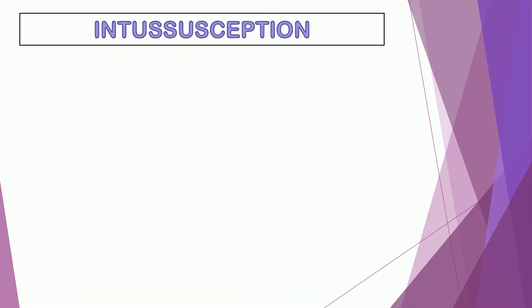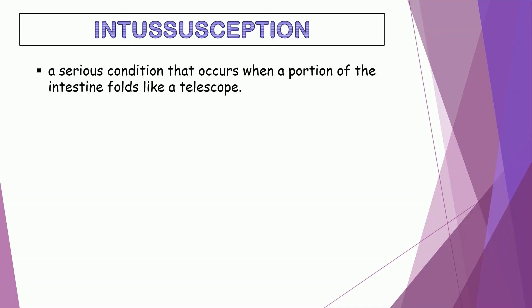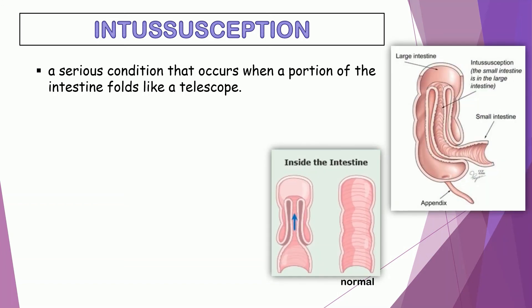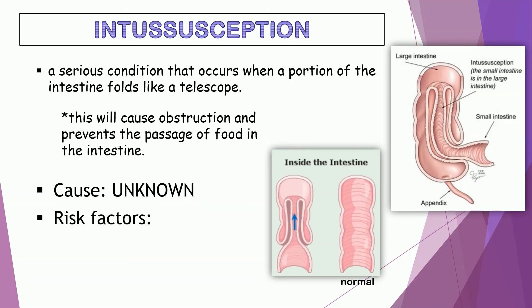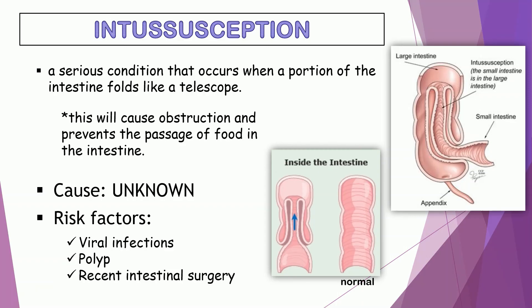Lastly, is intussusception. It is a serious condition that occurs when a portion of the intestine folds like a telescope, with one part slipping inside the other part. This causes obstruction and prevents the passage of food through the intestine. The cause is still unknown, although viral infections may be responsible in some cases. It may also be caused by an abnormality like a polyp in the intestine or as a result of recent intestinal surgery.